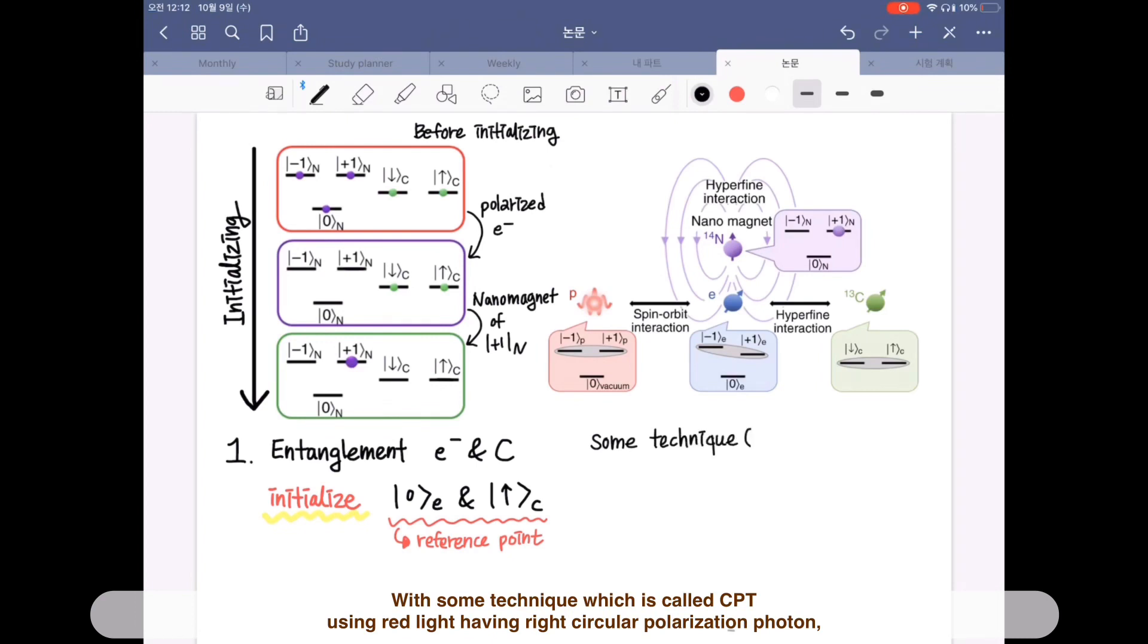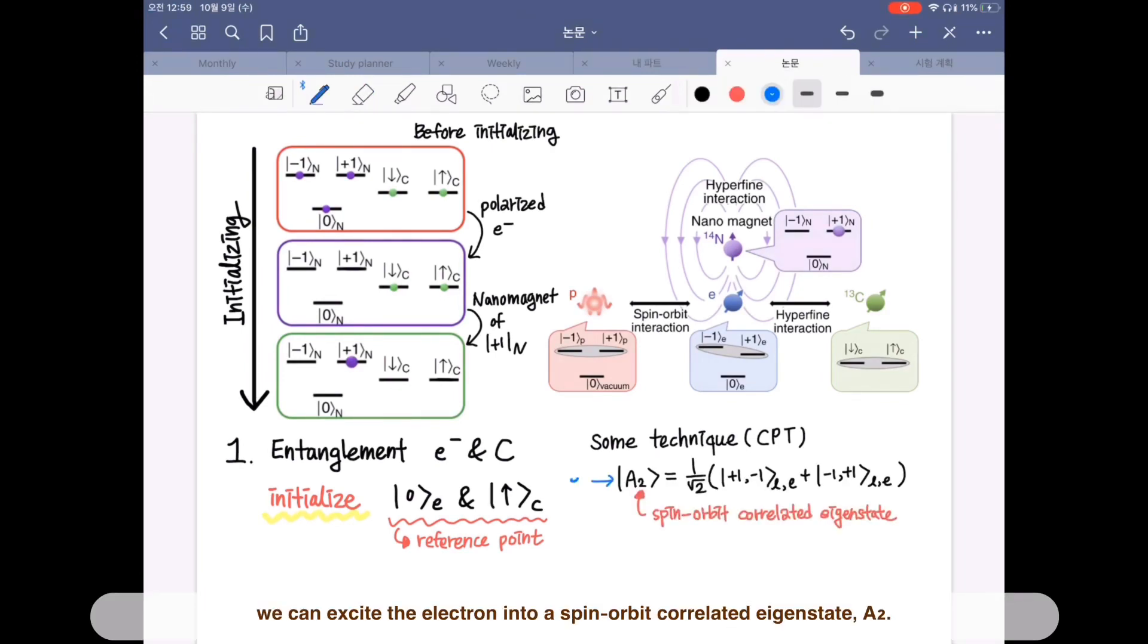which is called CPT using red light having right circular polarization photon, we can excite the electron into a spin-orbit correlated eigenstate A2 and then polarize electron into plus one state. It is transferred into the nitrogen nuclear spin to polarize into plus one state.